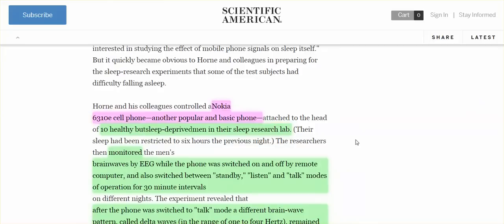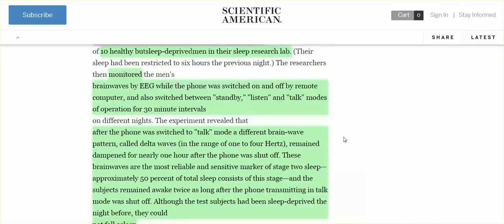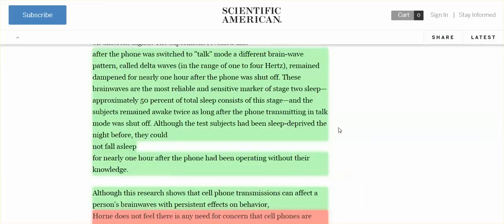So there were studies done on common phones. The phones that most people had at that particular time, it was the Nokia 631 or 6310e cell phone. Alright. They did a study on 10 healthy but sleep deprived men in their sleep research lab. They monitored the brain waves by EEG while the phone was switched on and off by a remote computer and also switched between standby, listen, and talk modes of operation for 30 minute intervals on different nights. After the phone was switched to talk mode, a different brain wave pattern called delta waves remained dampened for nearly one hour after the phone was shut off.